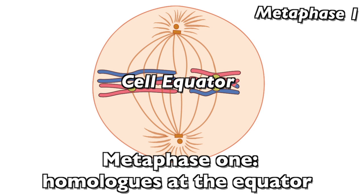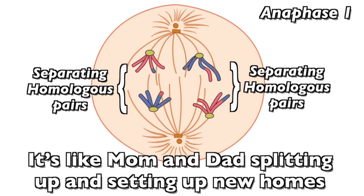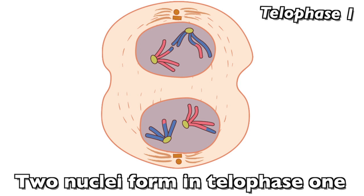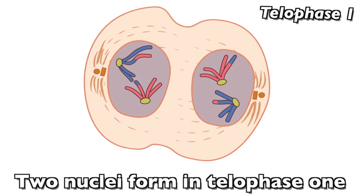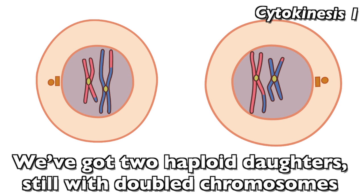Metaphase one: homologues to the equator. Anaphase one: they say see you later — it's like mom and dad splitting up and setting up new homes. Two nuclei form in telophase one, then cytokinesis. Meiosis one is done — we've got two haploid daughters, still with doubled chromosomes.